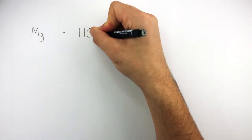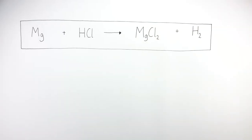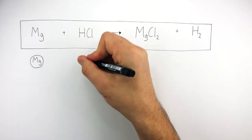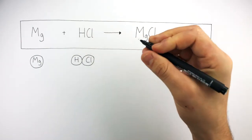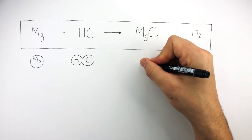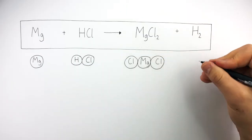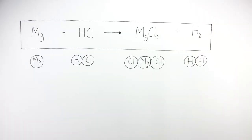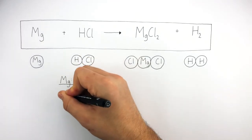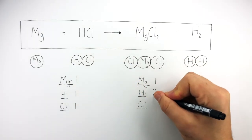Mg plus HCl reacting to form MgCl₂ plus H₂ is the next equation we need to balance. The equation tells us there is one magnesium atom on the left, one hydrogen chloride molecule on the left consisting of one hydrogen atom and one chlorine atom. On the right there is one magnesium chloride compound consisting of one magnesium atom and two chlorine atoms, and one hydrogen molecule consisting of two hydrogen atoms. Underneath we write Mg, H, and Cl on both sides and count up how many atoms there are.